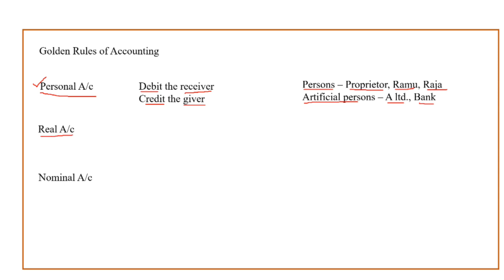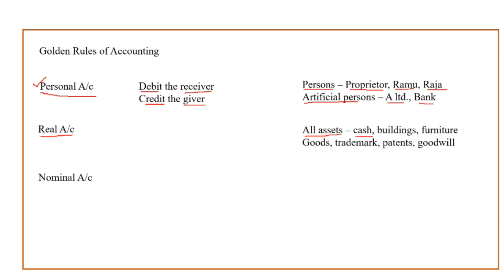Next comes the real account. Transactions recorded as per the real account rule cover all assets — meaning properties of the business. Examples of assets are cash, building, furniture, and even intangible assets like trademark, patent, goodwill, and also goods and stock in trade. All these are assets and these transactions will be recorded as per the rule of real account. The rule is: debit what comes in, credit what goes out. If an asset comes into the business, it should be debited; if it goes out, it should be credited.